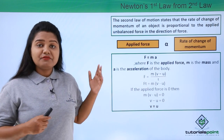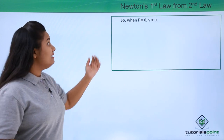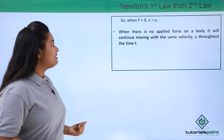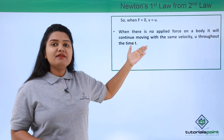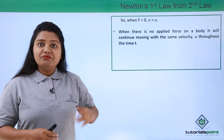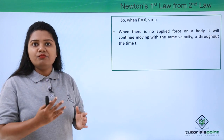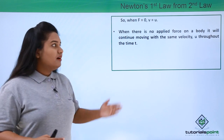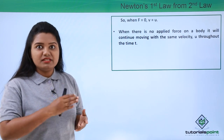We have concluded here that if the force applied to a body is zero, then its initial velocity is equal to its final velocity. Which means that when there is no applied force on a body, it will continue moving with the same velocity u throughout the time t. So when there is no force applied to a body which is moving, the body would move with the same velocity throughout.